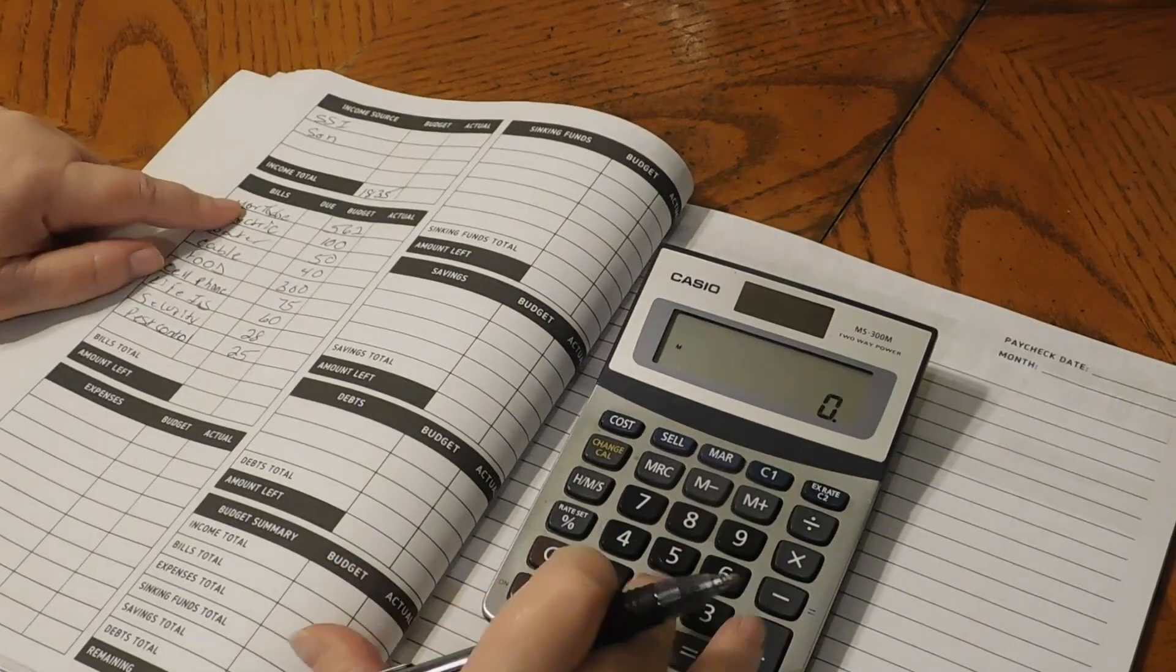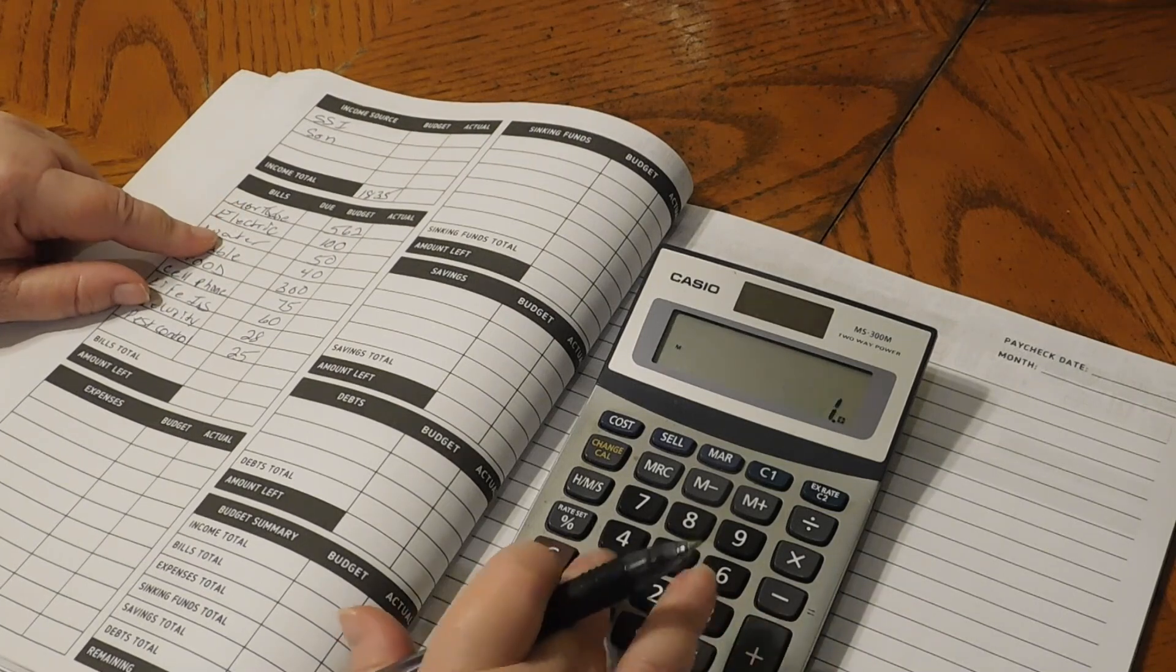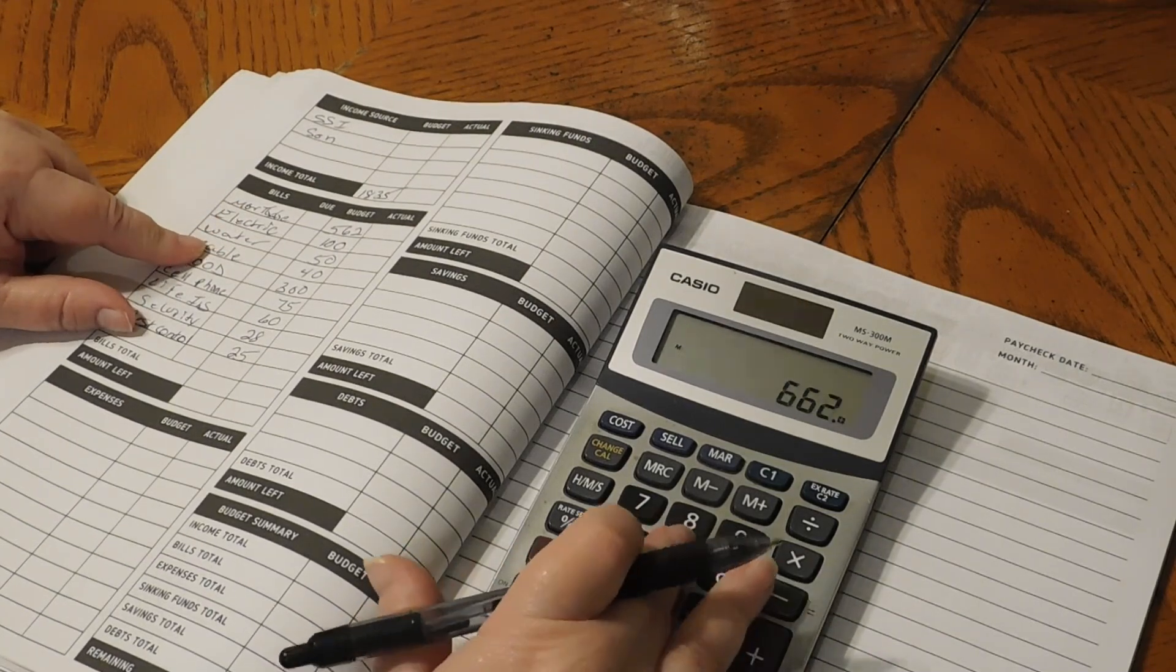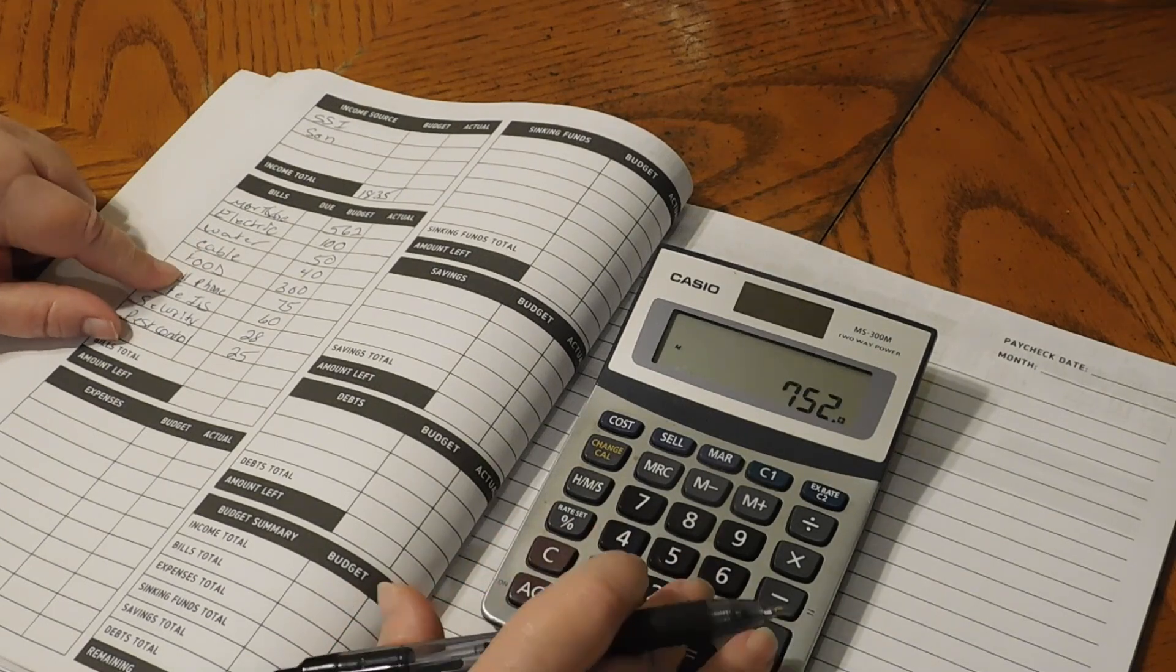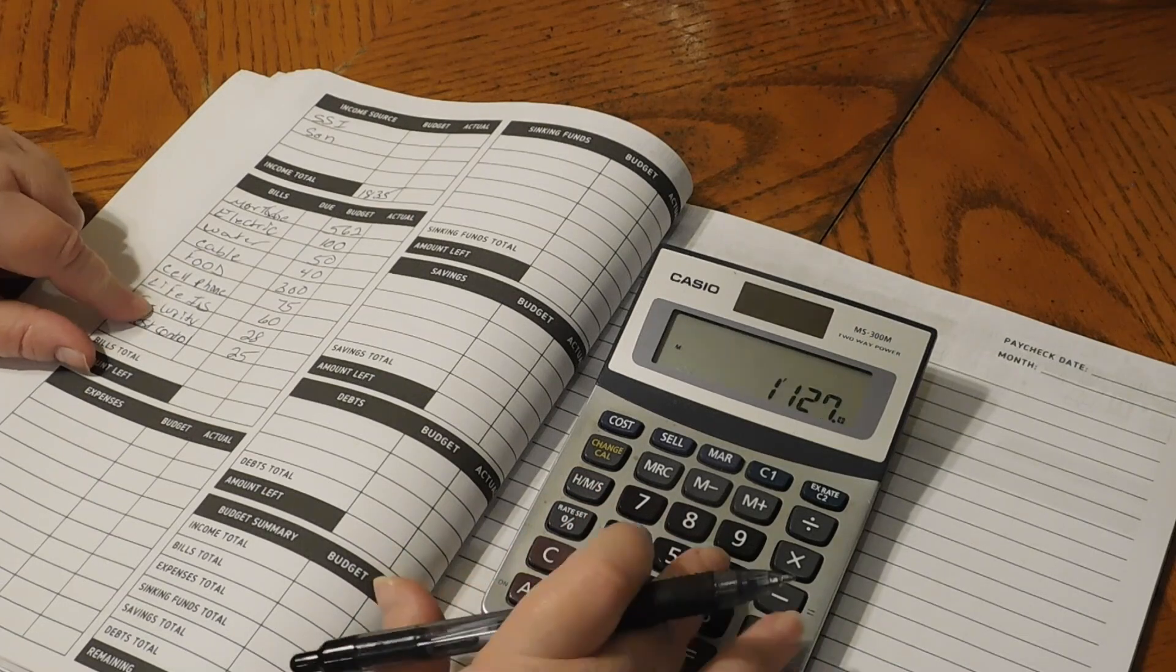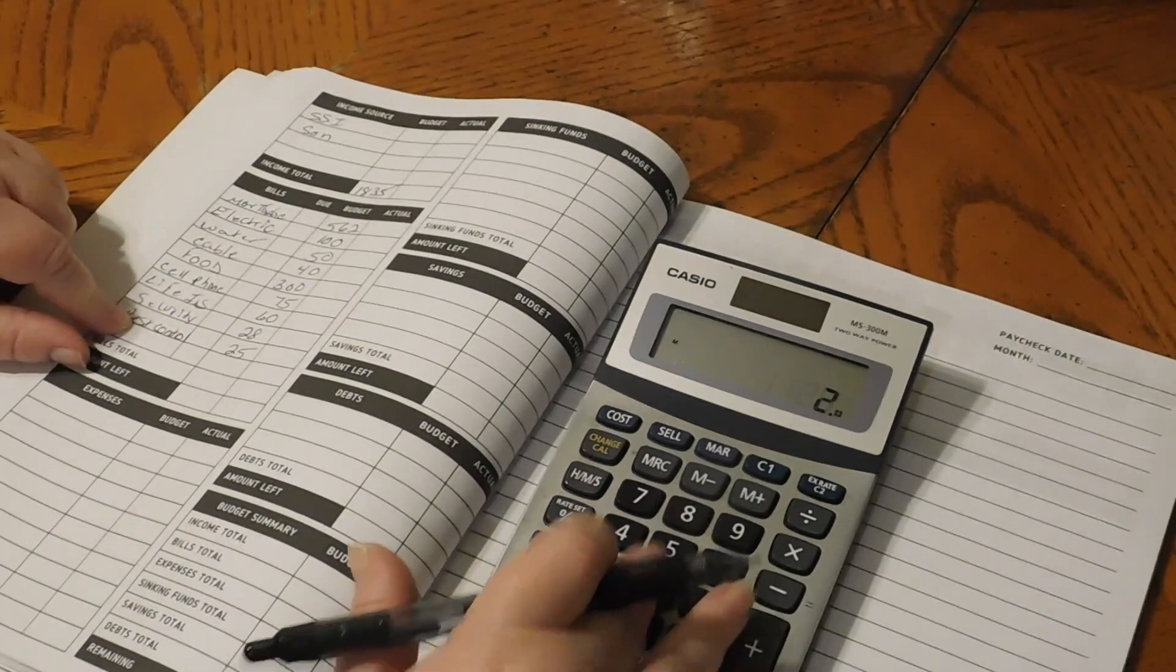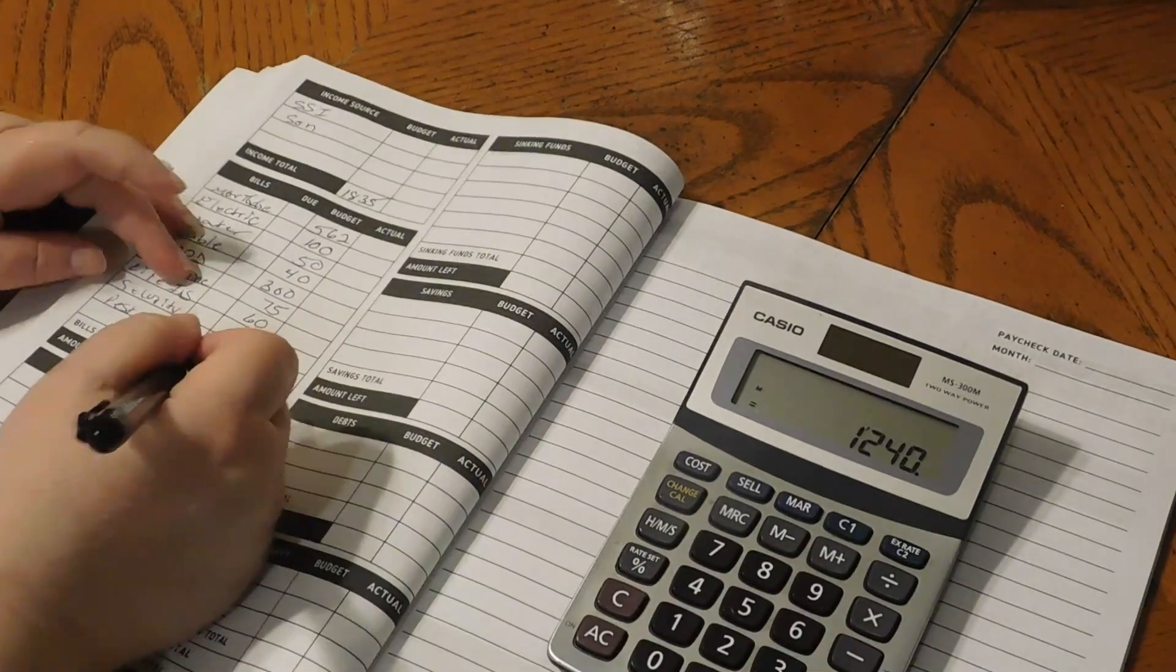So $562 plus $100, $50, $40, $300, $75, $60, $28, $25. It's $1,240.